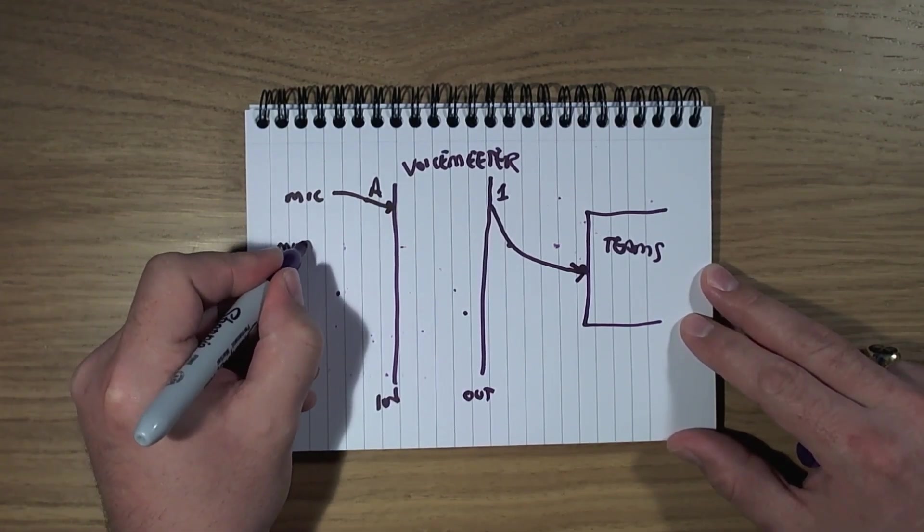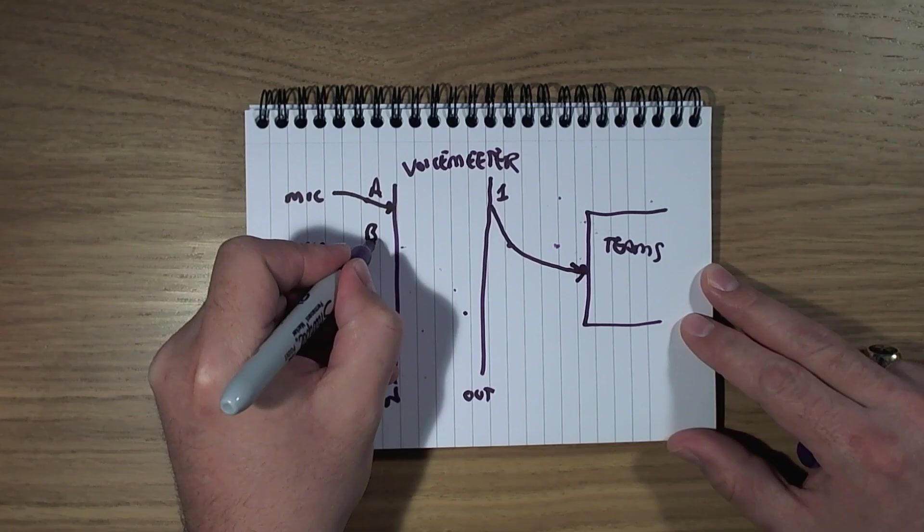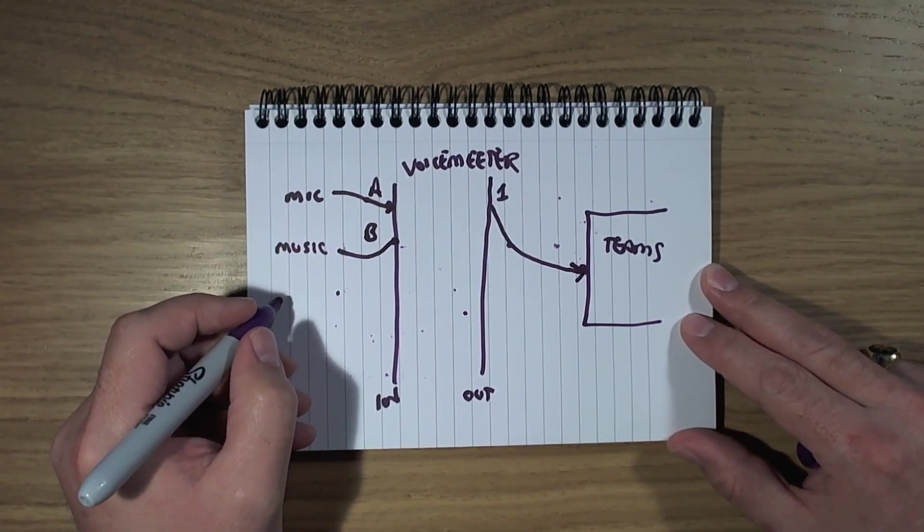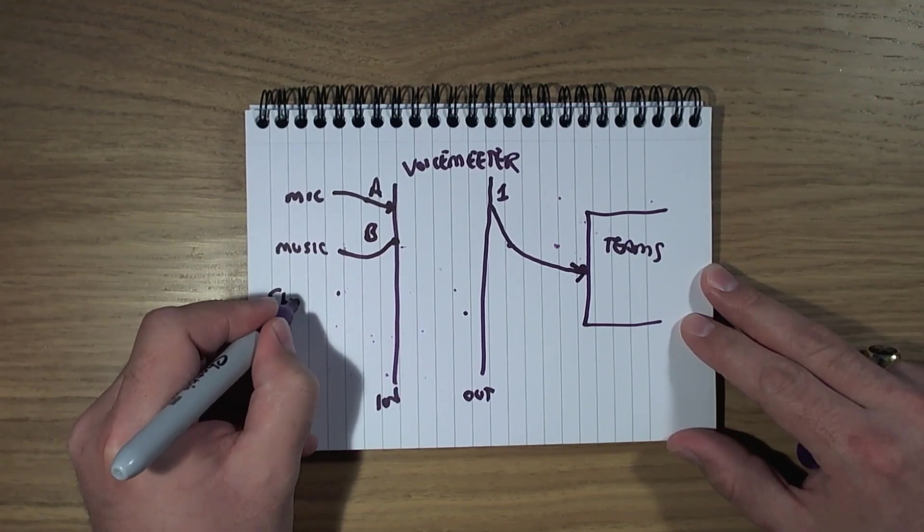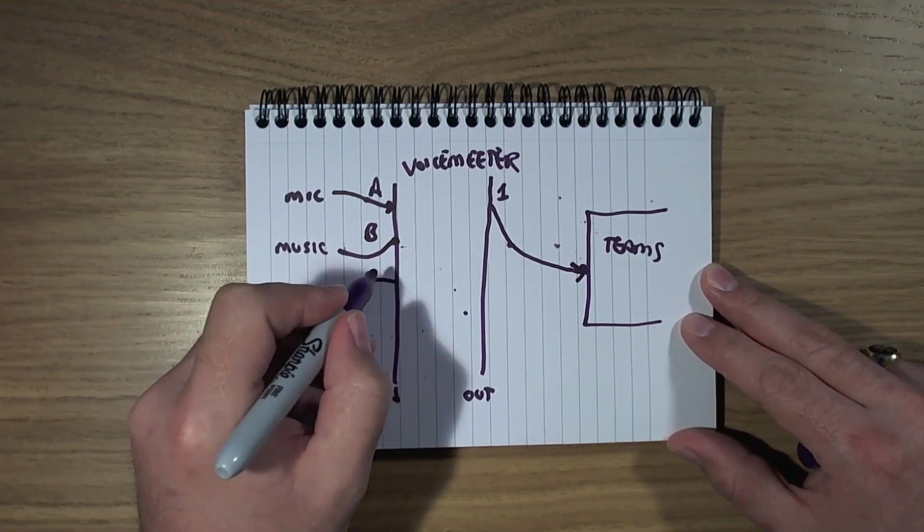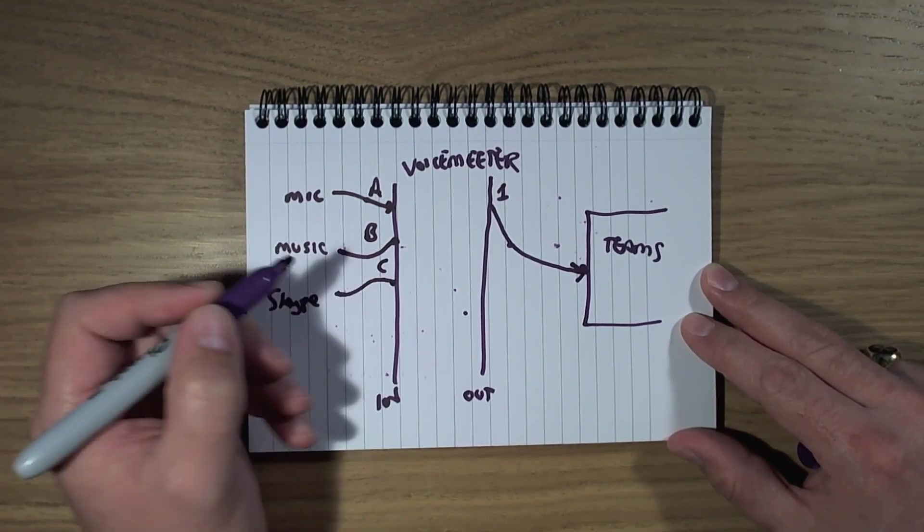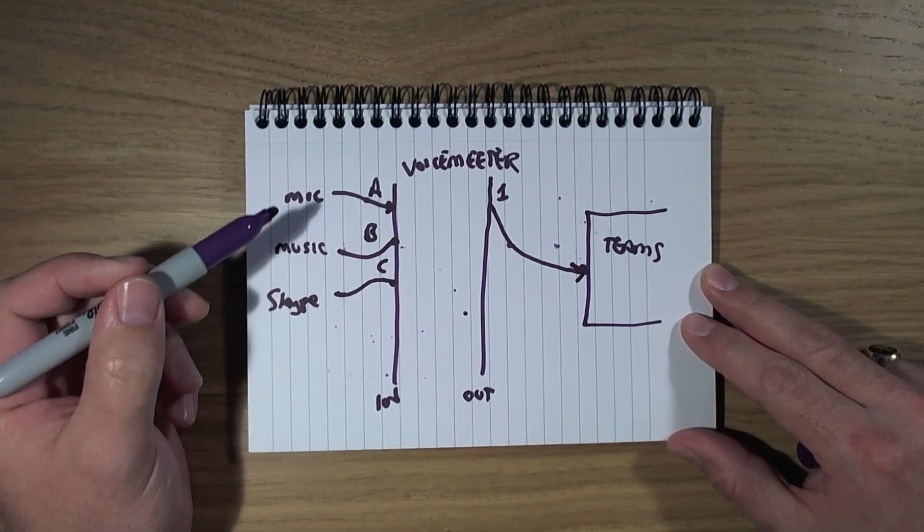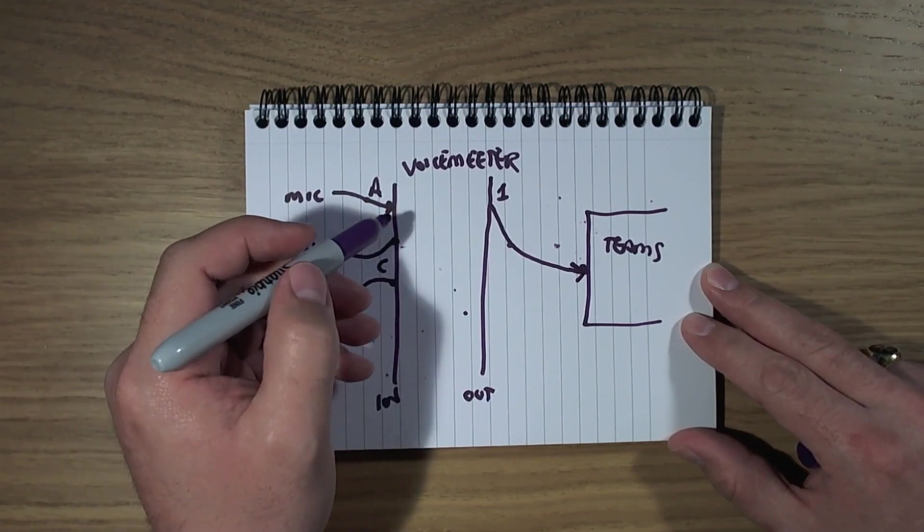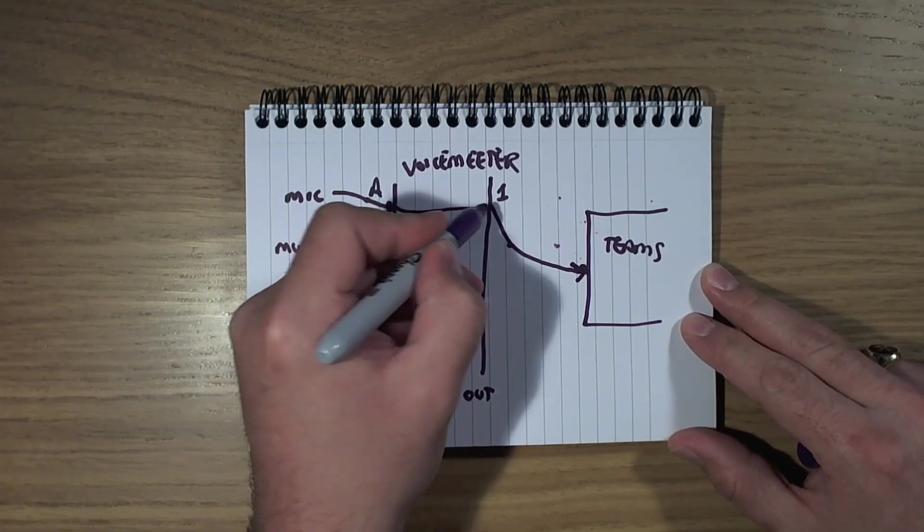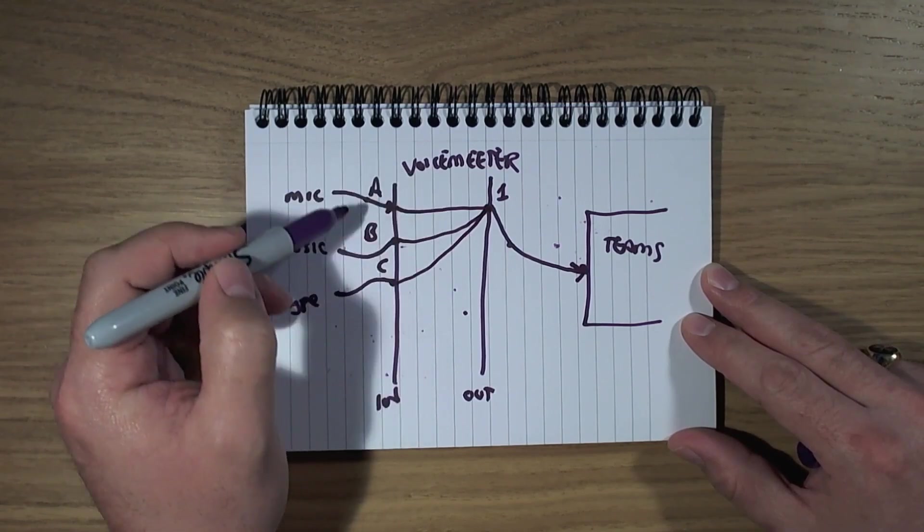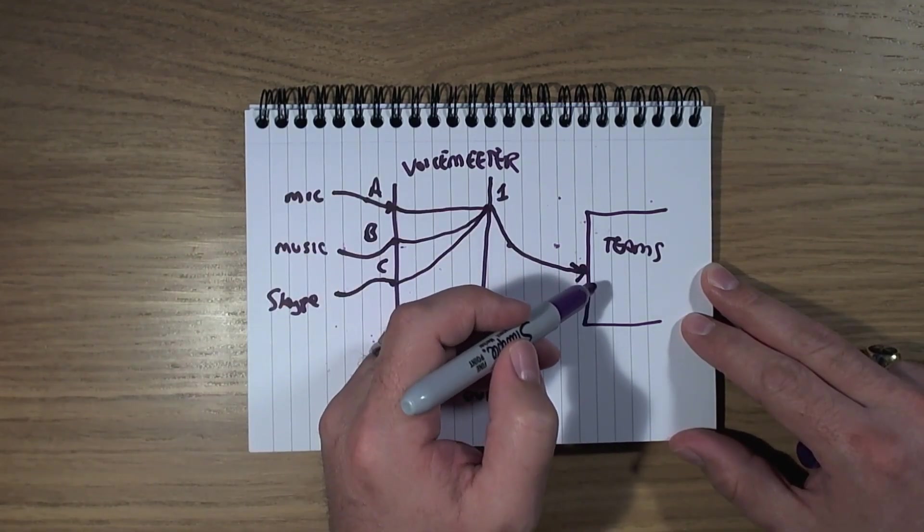And we're going to have our music, and that's going to go to input B, like so. And we're going to have, let's say we've got Skype. For whatever reason, they can't come in on Teams, we're going to dial them in on Skype. So that's going to come in, let's call that Input C. So we've got three separate inputs that we've got coming in. And what we're going to say in VoiceMeter is that all of these inputs get passed to Output 1. So VoiceMeter can mix those together to Output 1, which is now going to connect to Teams.